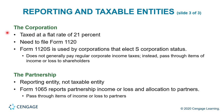The corporation is taxed at a flat rate of 21% and must file Form 1120. Form 1120-S is used by corporations that elect S corporation status; it does not generally pay regular corporate income tax but instead passes through items of income and loss to shareholders. A partnership is a reporting entity, not a taxable entity. Form 1065 reports partnership income and loss and the allocation to a partner, and is then used to prepare Form 1040 for the individual partners.